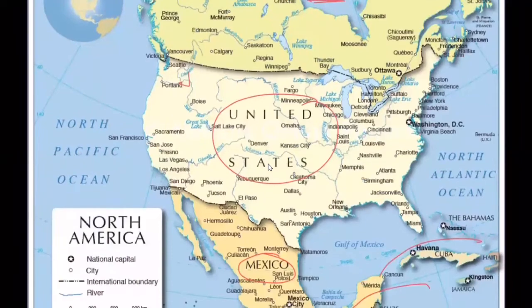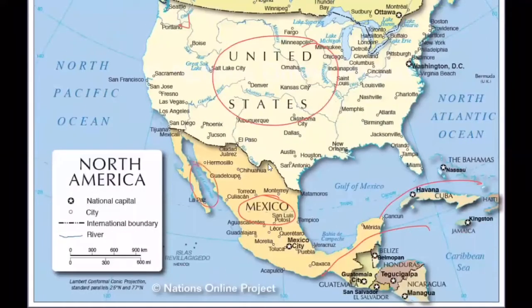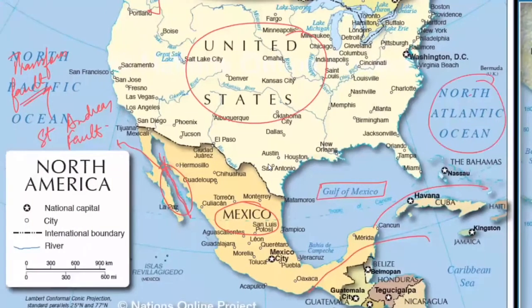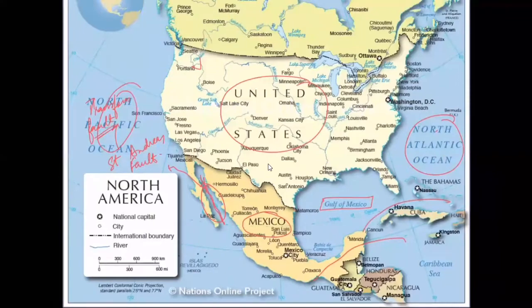There is the Gulf of California, and one important thing here is that St. Andreas fault exists, which is a transform boundary fault. Please do watch a geography lecture if you have any doubts. The North Atlantic Ocean and Pacific Ocean cover the east and west sides of the continent respectively.